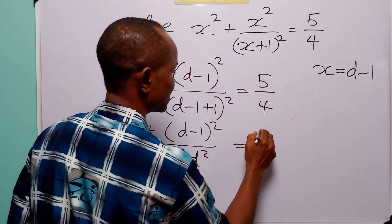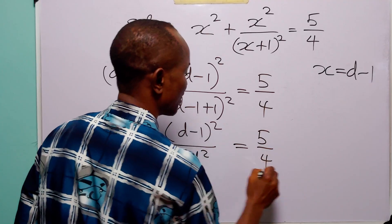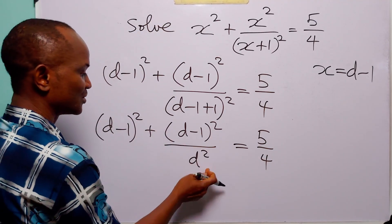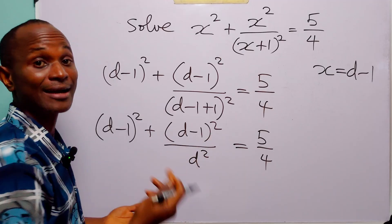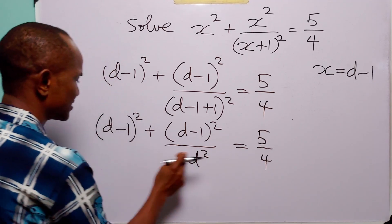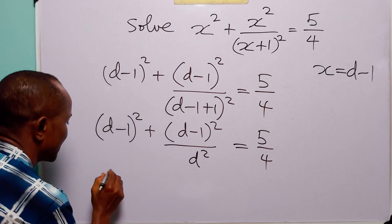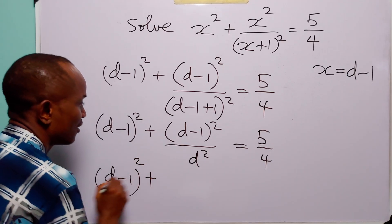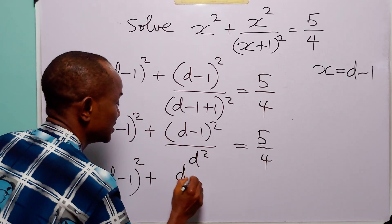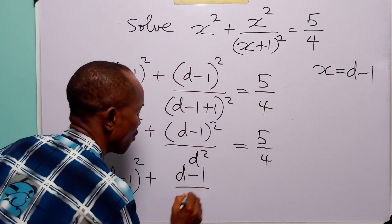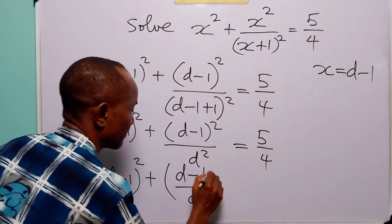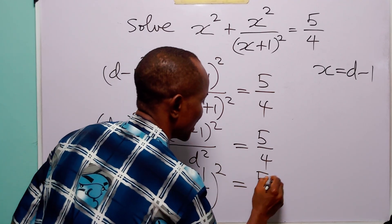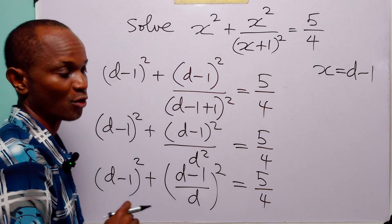Since these two terms have the same power, we can combine them. We can write the left-hand side as d minus 1 squared plus d minus 1 over d, all squared. And this is still equal to 5 over 4.